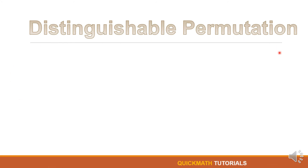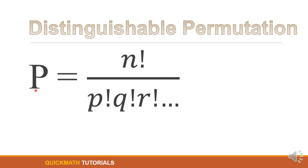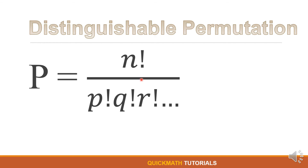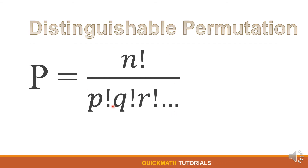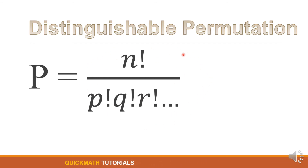For our third formula, we have the distinguishable permutation. The formula is P equals n factorial divided by p factorial times q factorial times r factorial, and so on. This formula is used if the given problem involves a word that has repeating letters.